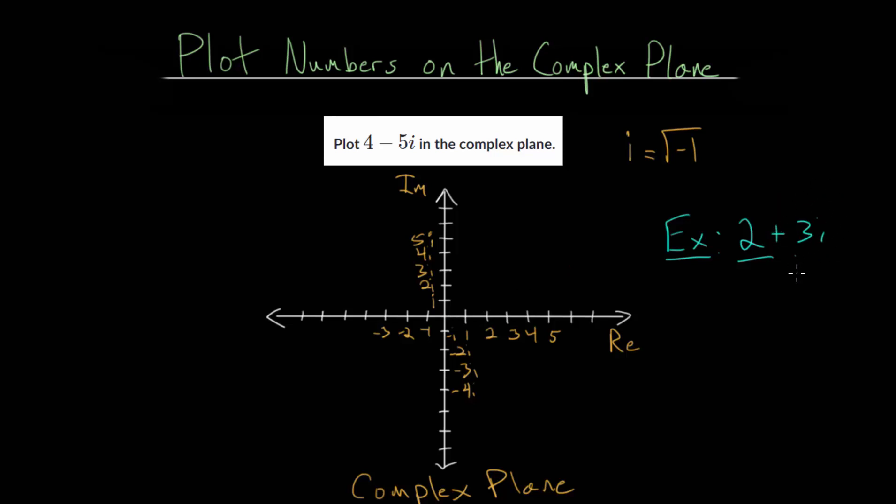to your imaginary value here. So we go over 2 to the right and then up 3 in the imaginary direction. And so this complex number is right here on the complex plane.